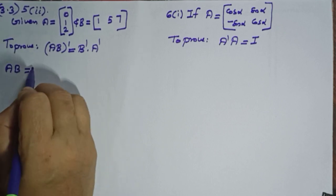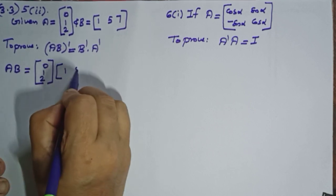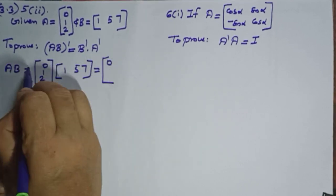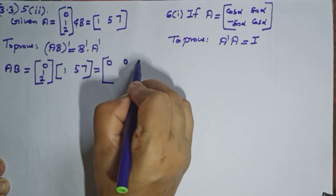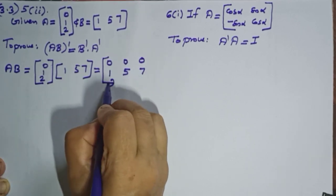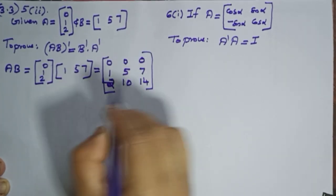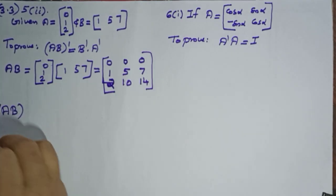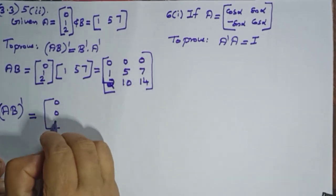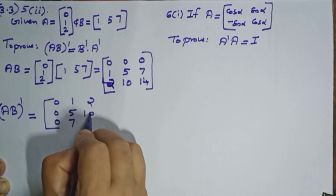AB equals column matrix (0, 1, 2) into row matrix (1, 5, 7), giving the 3×3 matrix: first row 0, 0, 0; second row 1, 5, 7; third row 2, 10, 14. Now taking the transpose, AB-dash equals: first column 0, 0, 0; second column 1, 5, 7; third column 2, 10, 14 — that is, the matrix with rows (0,1,2), (0,5,10), (0,7,14).